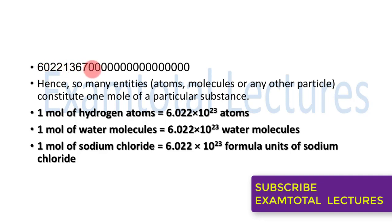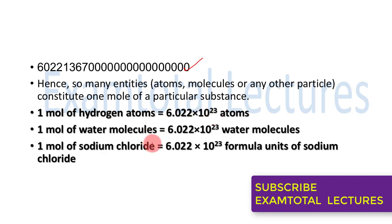You can see how large this number is — it is 602,213,670,000,000,000,000,000, so it is easier to write it as 6.022 × 10²³. So many entities, atoms, molecules, or any particle, constitute one mole of a particular substance. One mole of hydrogen atoms is 6.022 × 10²³ atoms. One mole of water molecules is 6.022 × 10²³ water molecules. One mole of sodium chloride is 6.022 × 10²³ formula units.